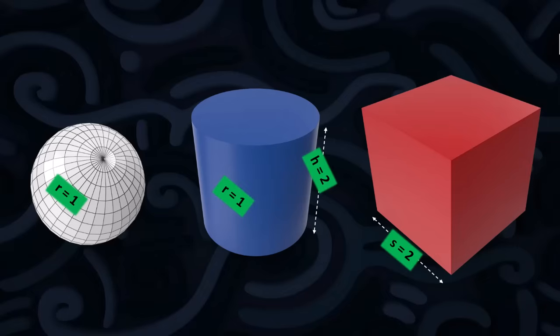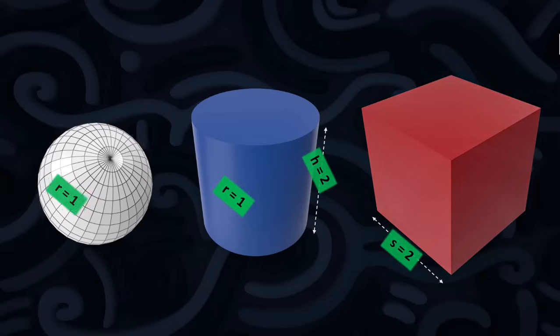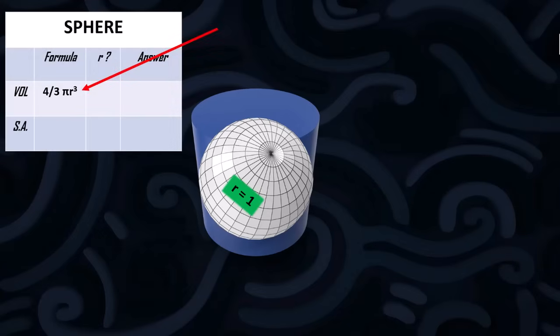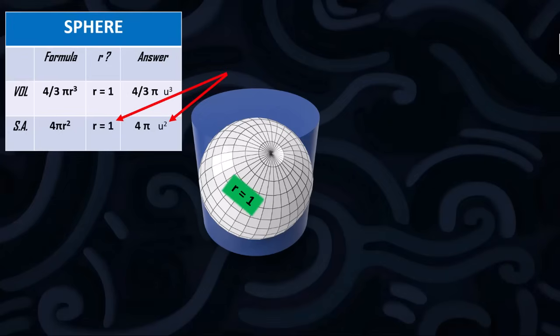And we'll come back to the cube later because I want to concentrate on this sphere and the cylinder. Now we know that the volume of a sphere is 4 over 3 pi r cubed. If r is 1 then that's 4 over 3 pi. The surface area is 4 pi r squared, and if r is 1 then that's 4 pi.